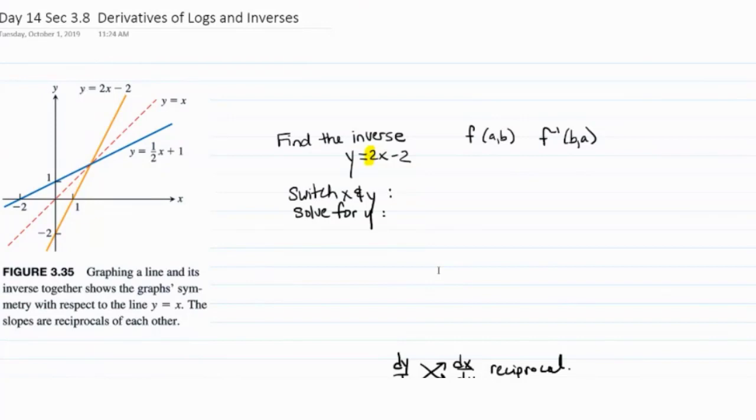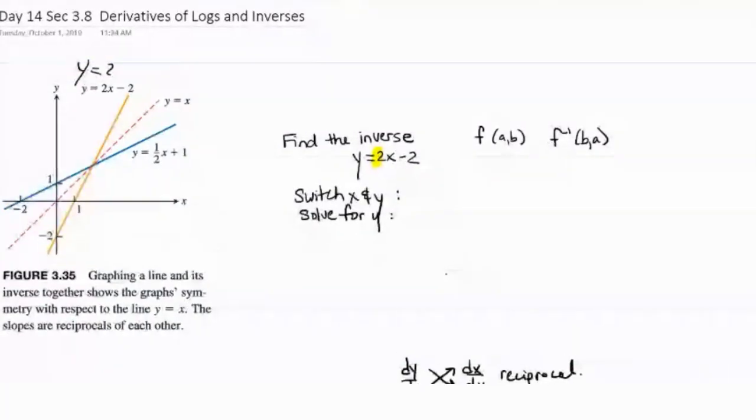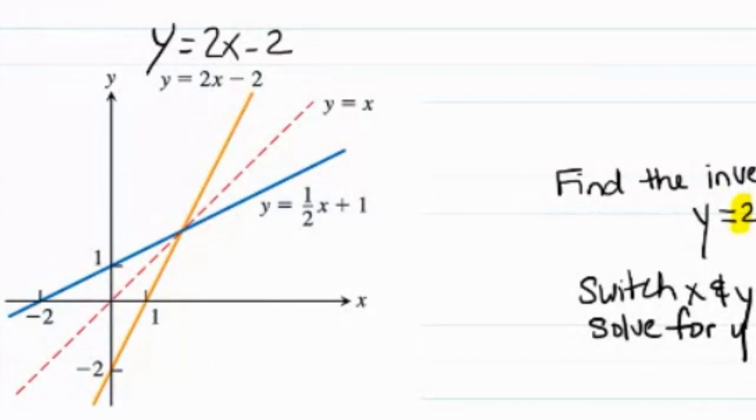Here's an example of a pair of inverse functions. We have the function y equals 2x minus 2, and we have the function y equals 1 half x plus 1. Although I'm going to rewrite this function in a different way. Notice that if you think of 1 as 2 over 2, you can add these two together and you have x plus 2 over 2. So either way you want to think about it, it's still the inverse.